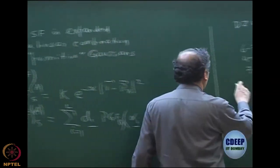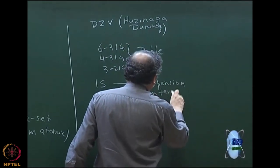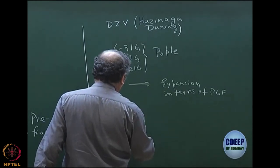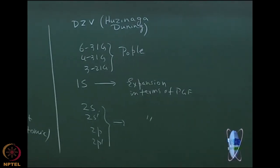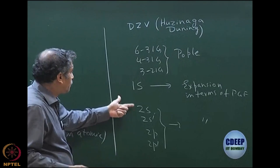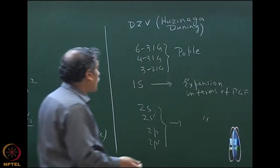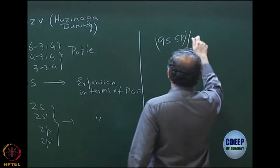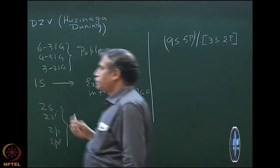So you have an expansion of the 1s function in terms of PGFs. Then you have 2s, 2s', 2p, 2p', each expanded again in terms of primitive Gaussians with some exponents and coefficients. Usually what is done is that the exponents are kept the same for both s and p within a pair (2s same as 2p, 2s' same as 2p'), but the prime and unprime have different exponents. One commonly used basis by Huzinaga-Dunning was called 9s5p/3s2p.